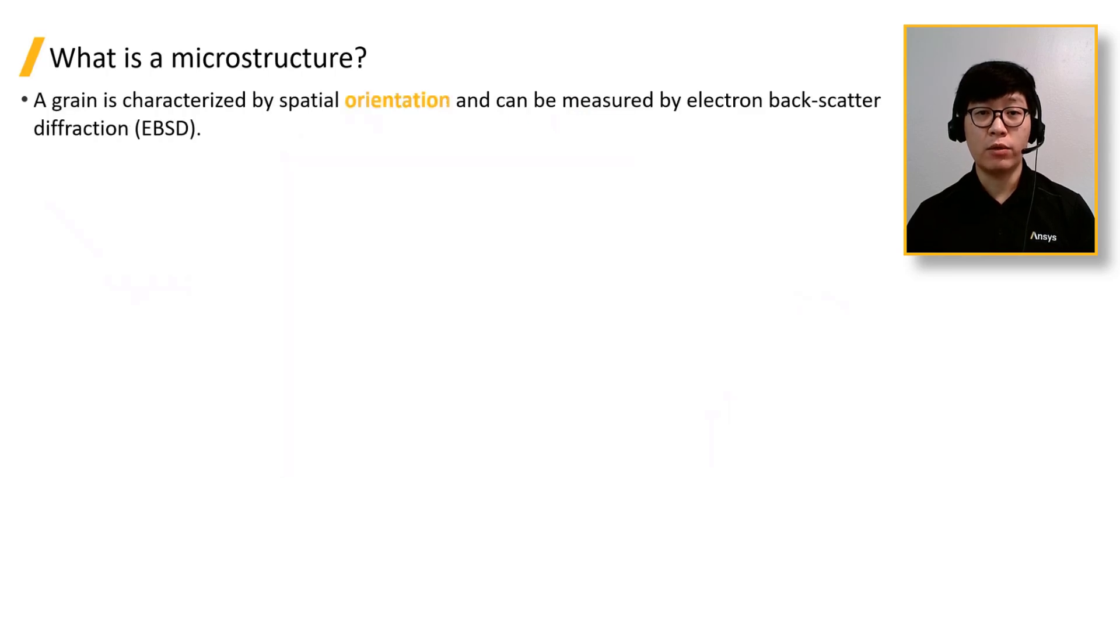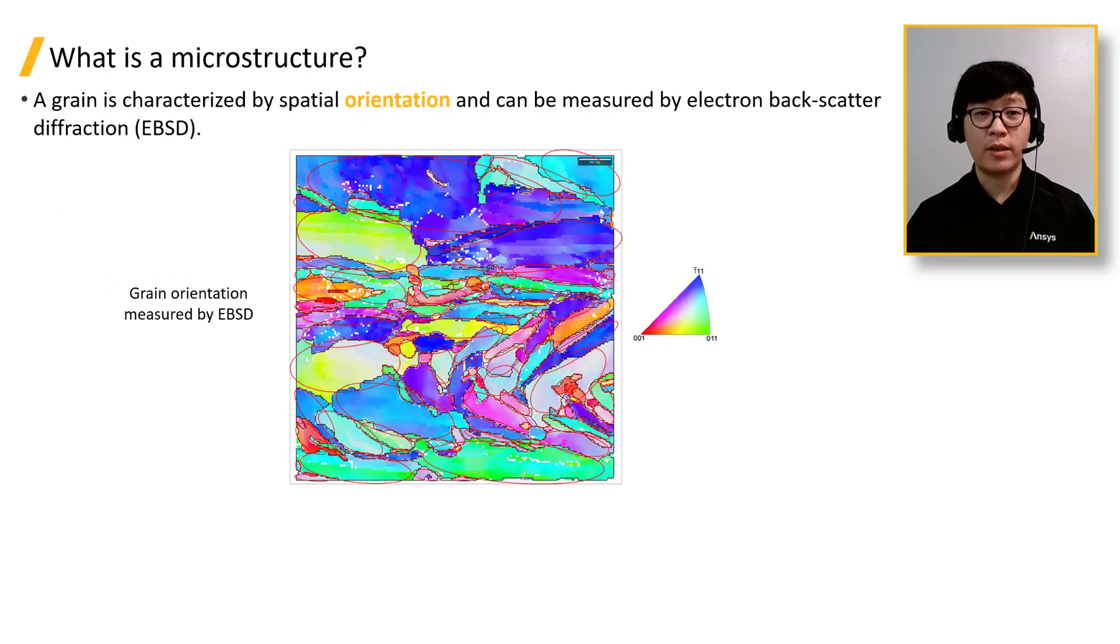Each grain in the microstructure is characterized by their spatial orientation, which can be measured experimentally by a technique called electron backscatter diffraction, or EBSD. Here, we show an example EBSD measurement image obtained from experiments.